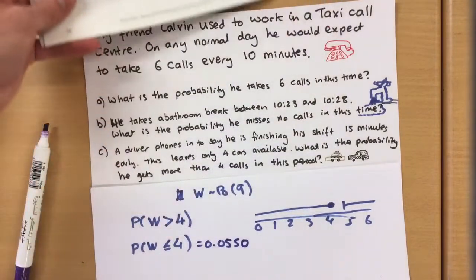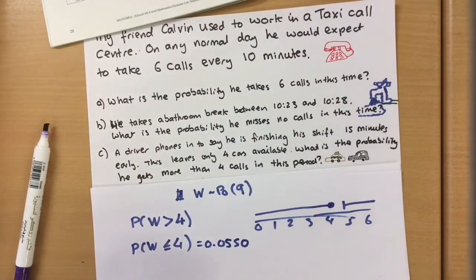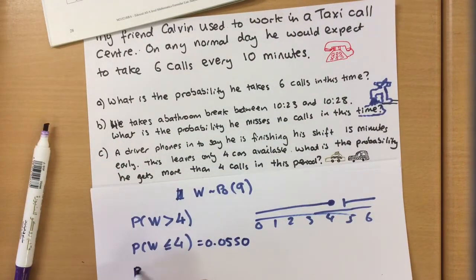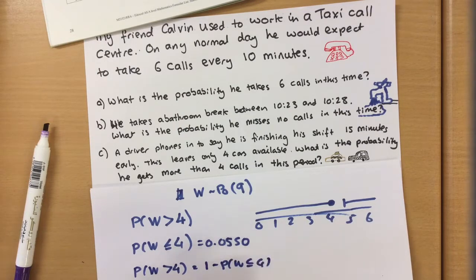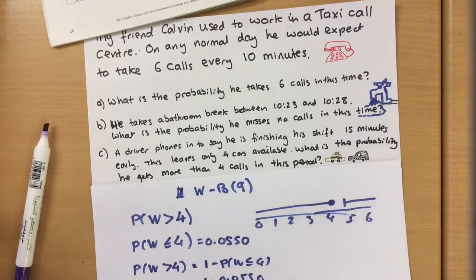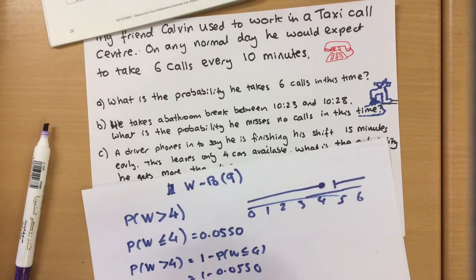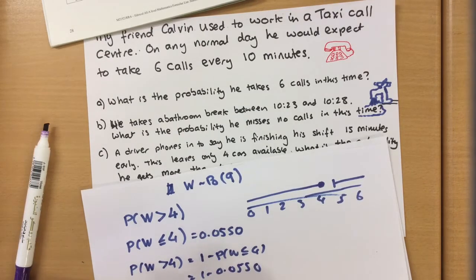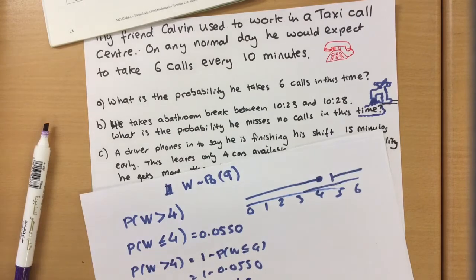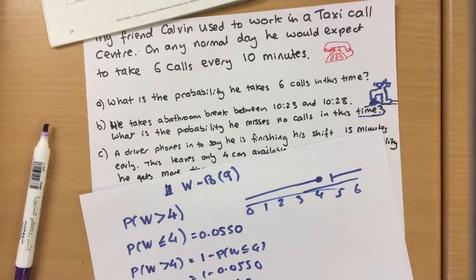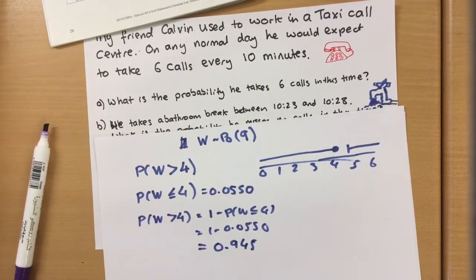So chance of getting more than four is one minus that, which is one minus 0.0550. There is going to be a 0.945 chance to get more than four calls. There we go, wow.